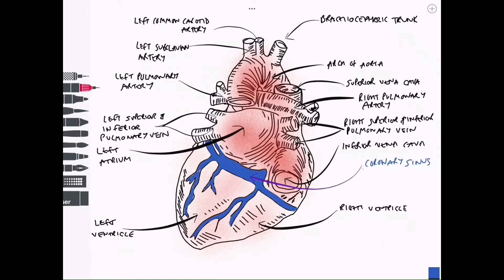It's located on the posterior part of the atrioventricular groove, otherwise known as the coronary sulcus, and it's continuous with the great cardiac vein which we will label in a moment.